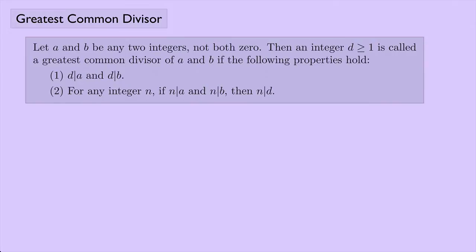Here is the definition of a greatest common divisor. Let A and B be any two integers, not both 0. Then an integer D, which is greater than or equal to 1, is called a greatest common divisor of A and B if the following two properties hold. Property one: D divides A and D divides B. Property two: for any integer N, if N divides A and N divides B, then N divides D.